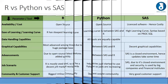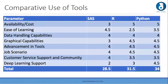Scaling each tool from 1 to 5: for availability and cost, SAS is given 3 out of 5 since it is costly, while R and Python are given 5 since they are freely available. For ease of learning, SAS has a single coding structure, while R and Python vary by use case. For data handling capabilities, all three tools handle huge amounts of data, so each is given 4 out of 5.